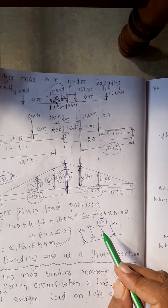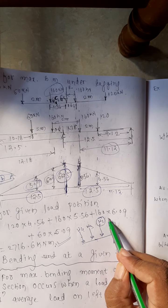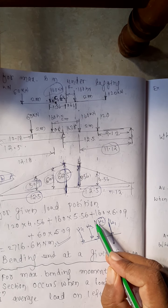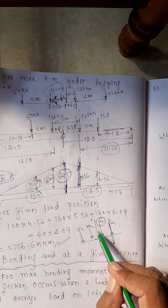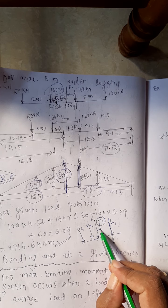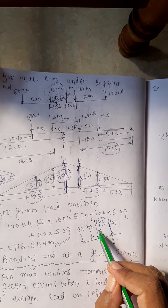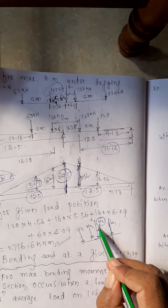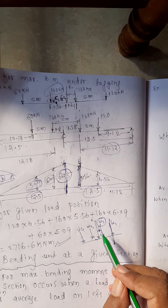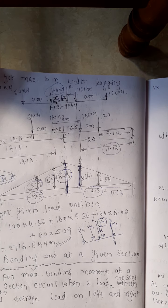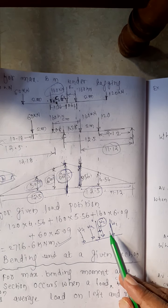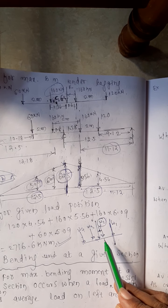What we did? We calculated the center of gravity or the position of the resultant from one end. Whatever resultant we got, we got the distance between the load under which we want the maximum bending moment and the resultant load, and that distance divided by 2 — that point we are getting. We need to keep that point such that it coincides with the center of the girder. Then only we will get the maximum bending moment under load w2.